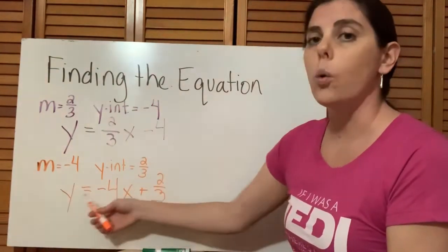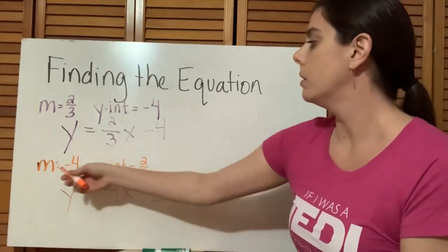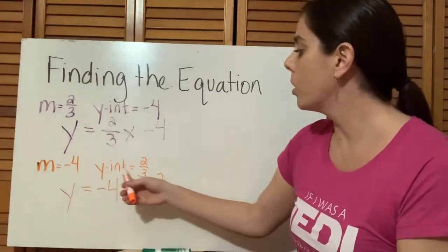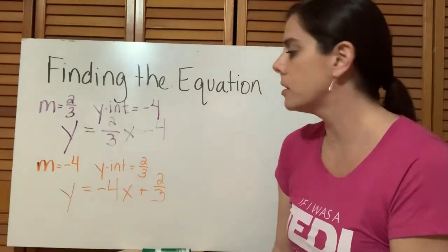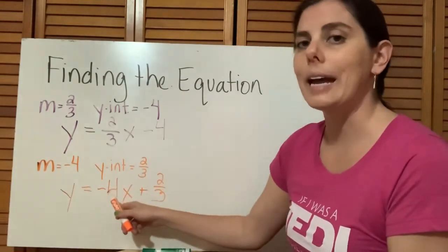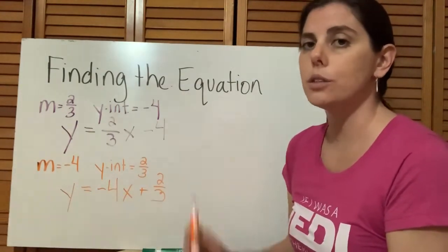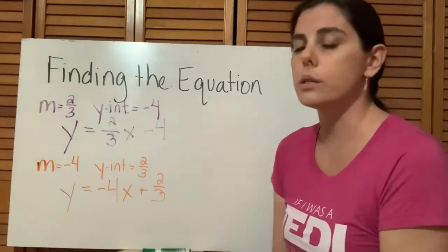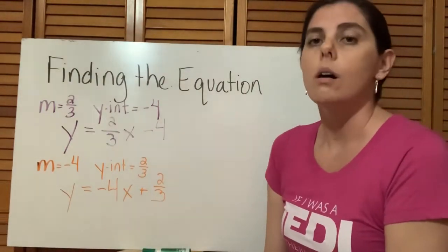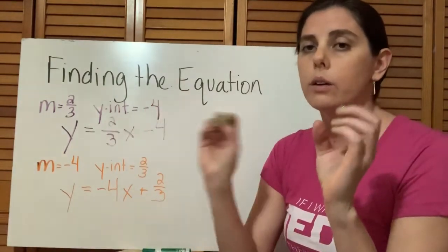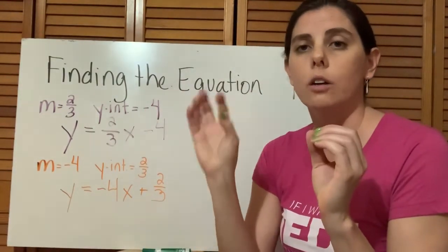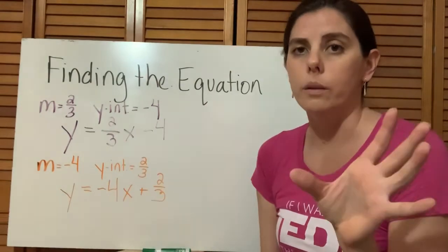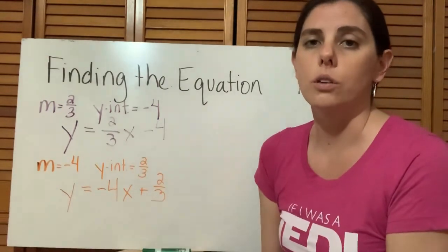So the equation of this example, with a slope of negative 4 and a y-intercept of two thirds, is y equals negative 4x plus two thirds. So in the homework, when it's giving you a slope and a y-intercept, all you have to do is take those values and plug them in to your generic equation where the m is and where the b is, and that will give you your equation.